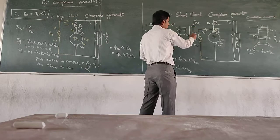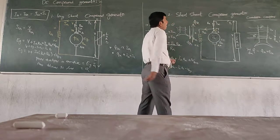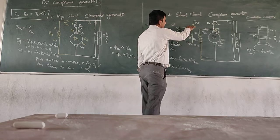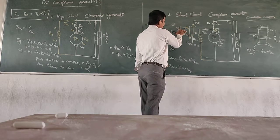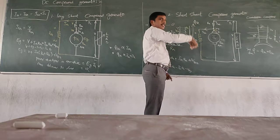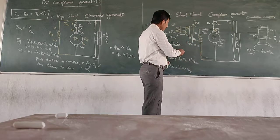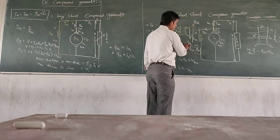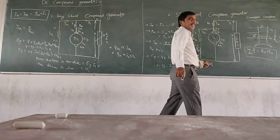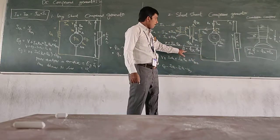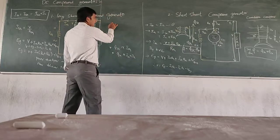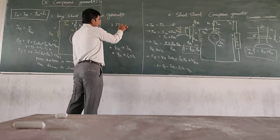There are three types based on field flux interaction. If both fluxes — shunt and series — are adding in nature, it is a cumulative compound generator. If the shunt field flux is in one direction and series field flux is in the opposite direction, current flow in series field winding is in another direction, meaning phi_sh and phi_sc are opposite in nature — that is a differential compound generator. Net flux: phi = phi_sh minus phi_sc.